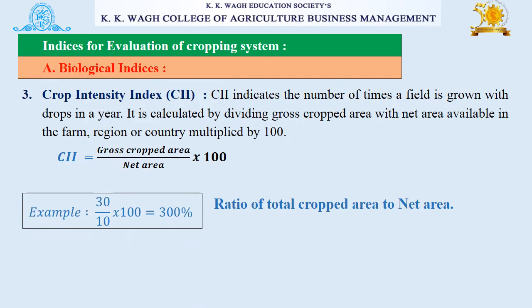Next is cropping intensity index (CII). CII indicates the number of times a field is grown with crops in a year. CII is equal to gross cropped area divided by net area, multiplied by 100. It is simply the ratio of total cropped area to net area.